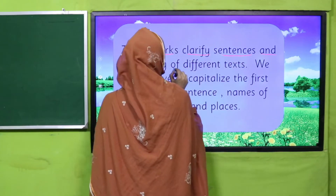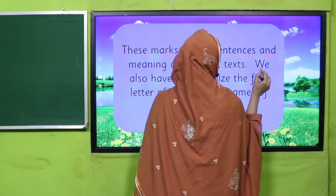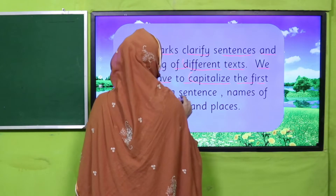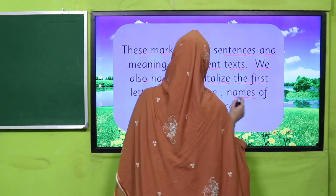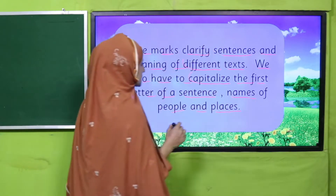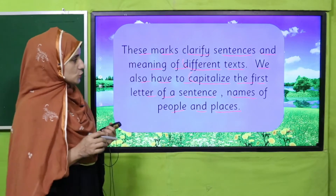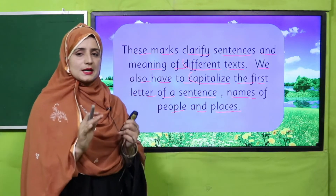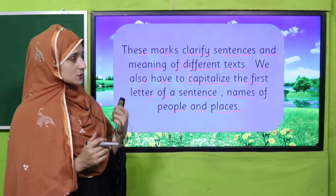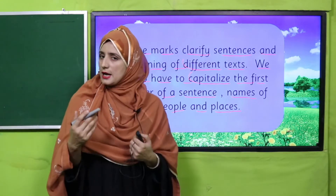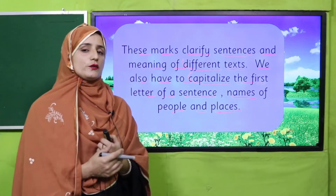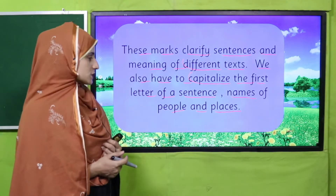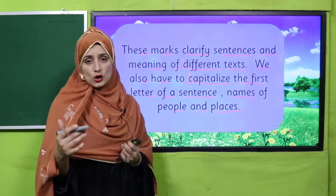What is the function of these symbols? These marks clarify sentences and the meaning of different texts. We also have to capitalize the first letter of a sentence and the names of people and places. So capitalizing the first letter of a sentence is also a way of punctuation.